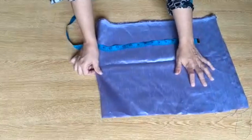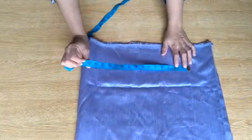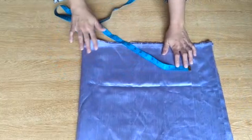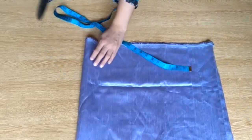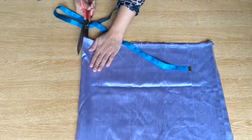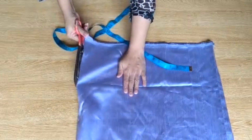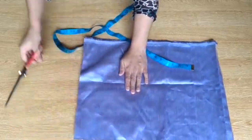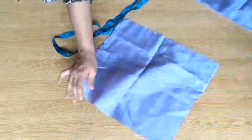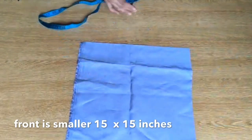Friends, the upper side of the cushion is small and you keep 4 inches from the back side of the cushion. So the front side of the cushion is a bit smaller than the back side of the cushion. Please place the cushion on the cloth and cut according to the measurement.